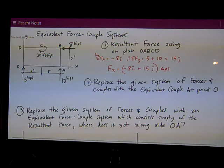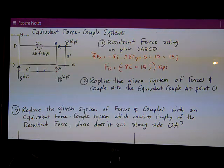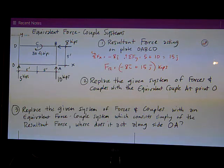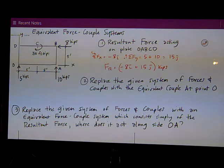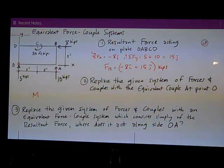Question number two. Replace the given system of forces and couples with the equivalent couple at point O. So I can look at my equation sheet. Once again, that just means what's the resultant moment on the plate. That's just the sum of the moments about point O.